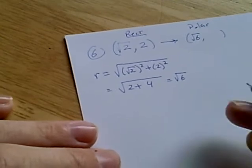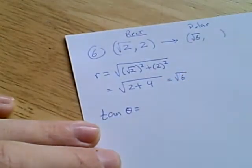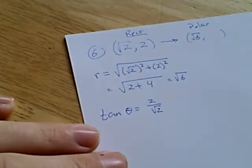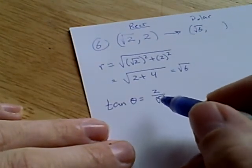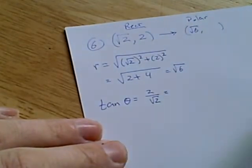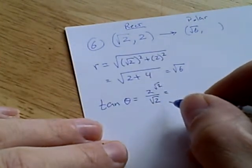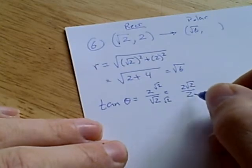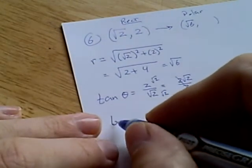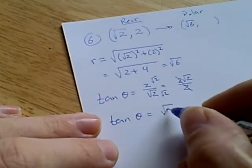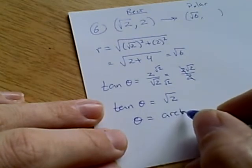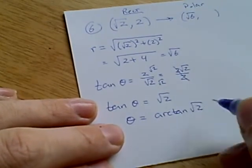Now let's look at the angle. The angle θ is defined as the ratio of the y coordinate over x coordinate. So that's 2 over root 2. This looks sort of vaguely familiar. We can simplify this a bit. Let's multiply top and bottom by root 2. This will give us 2 root 2 over 2. Or just root 2. So we have tangent of θ equals root 2. So θ equals arctan of root 2.